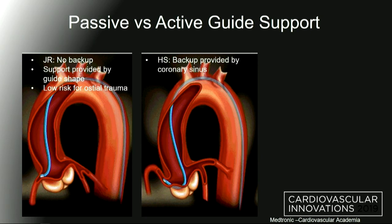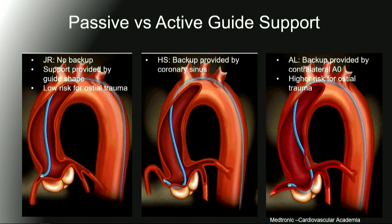Either the cusp, such as is the case with a hockey stick catheter, or the opposing aortic wall, such as the case with an AL-type guide. Of course, the more backup you have, the higher the risk of trauma to the ostium. So you have to be careful with that.